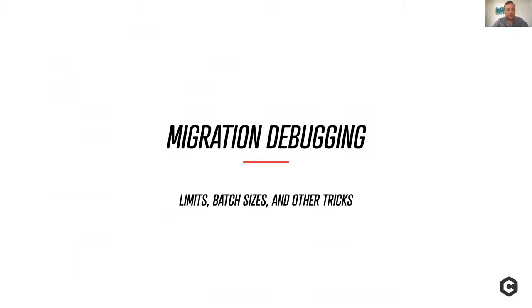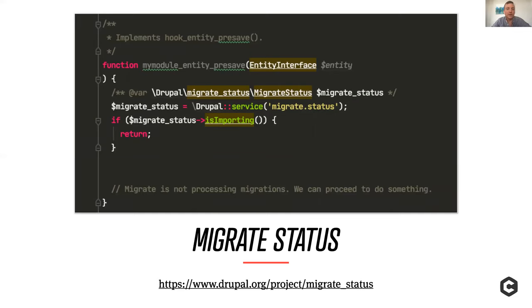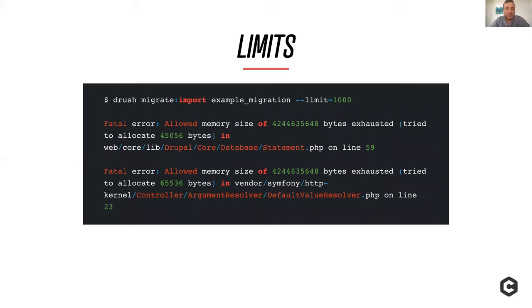Now that we've written our migrations, invariably there will be problems. There's this cool migrate_status module — many times in your code you have entity hooks that you might not want all of those running during a migration. For example, you might be generating field values from other field values and you don't need to do that because the migration does it for you. Or maybe you're making an API call on entity save and you don't want to make a couple thousand API calls in seconds and blow up your API limit. This is a clean way to detect if the migration is running and adjust accordingly.